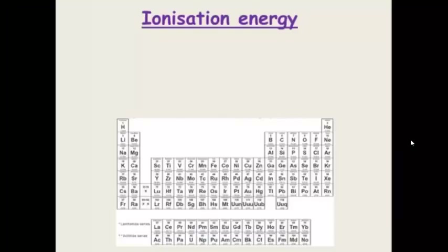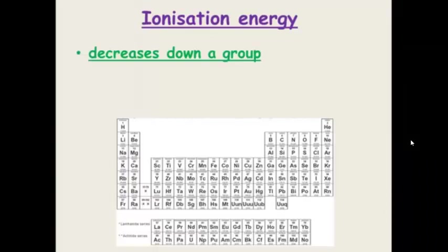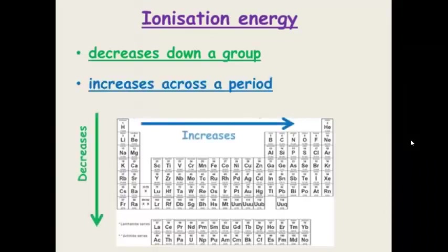In summary, ionisation energy decreases down a group and increases across a period.